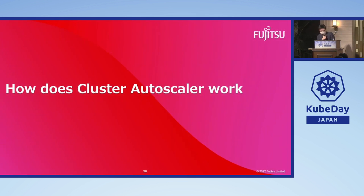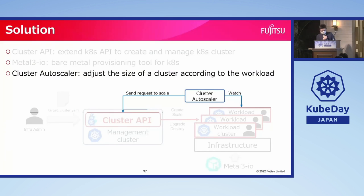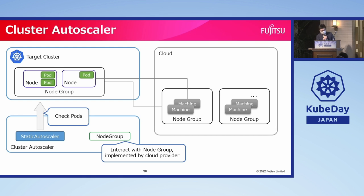The last project is Cluster Autoscaler. It can adjust the size of a Kubernetes cluster according to its workload. The core mechanism it uses is the node group concept. A node group is a set of nodes that have the same capacity and a set of labels. The Cluster Autoscaler defines an interface, also called node group, to control a node group, with methods like increase size or delete nodes, and it is implemented by each cloud provider.